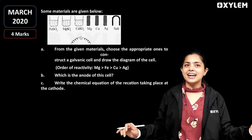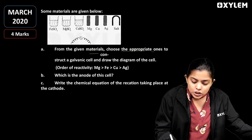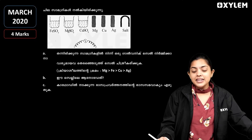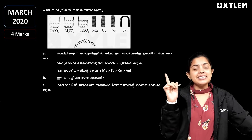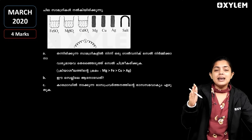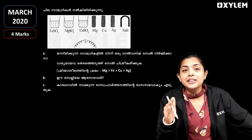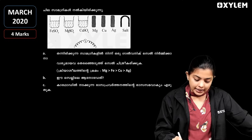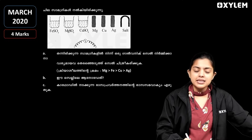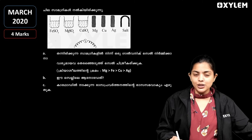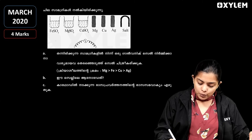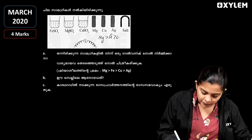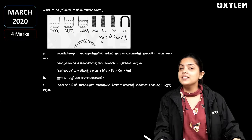Now let's choose the appropriate metals to construct a galvanic cell. We will work with other methods. We get two reactions based on reactivity. The metals available are magnesium, copper, silver, and iron. Electrolytes are iron sulphate, magnesium sulphate, and copper sulphate. The reactivity order is: magnesium, iron, copper, silver.